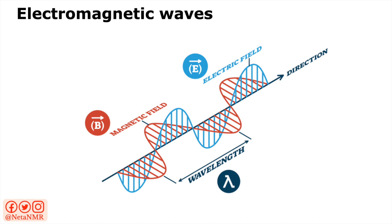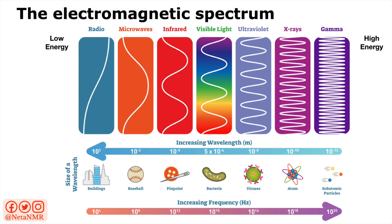Their wavelength, defined as the distance between two successive peaks of the wave, can be very short, very long, or anything in between. The shorter the wavelength, the higher the frequency of the wave and the higher the energy of the electromagnetic radiation. You can see this clearly in this figure depicting the entire electromagnetic spectrum, moving from very high energies at the right side to low energies at the left side.